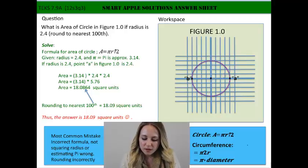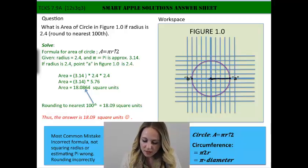The first thing you should do is label your figure so you don't forget about anything. They tell us that our radius is 2.4. The radius is right here from the center point to the outermost edge.